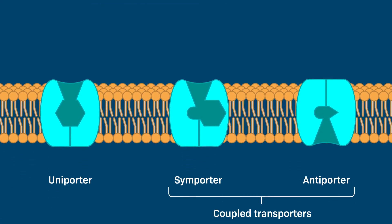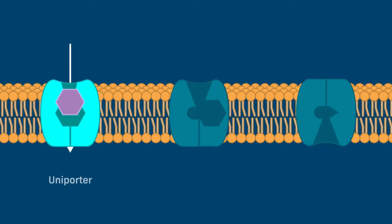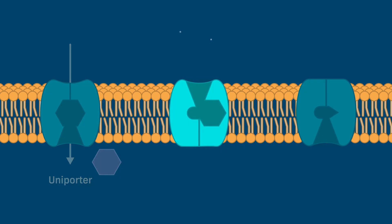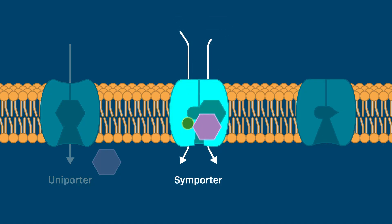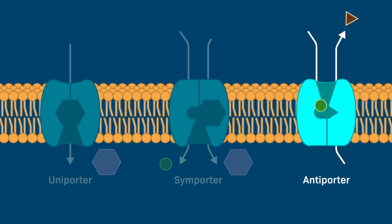In sum, carrier proteins bind to solute molecules and change conformations as they transport solutes across the membrane. Carrier proteins can be grouped into three types: uniporters move one type of solute molecule, symporters carry two types of solute molecules in the same direction, and antiporters move two types of solutes in opposite directions.